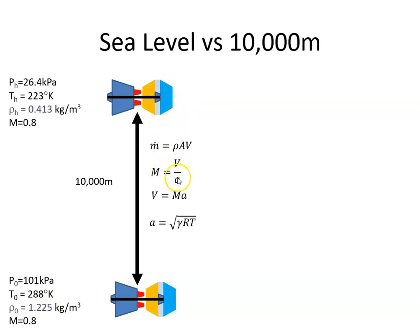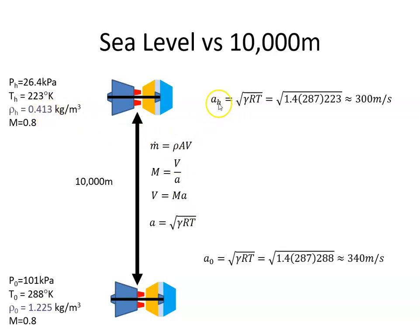The Mach number is the velocity over the speed of sound. If we transpose that we can get the velocity which is the Mach number times the speed of sound, and the speed of sound is gamma RT. So gamma is the ratio of specific heat capacities and R is the universal gas constant. At altitude the speed of sound will be gamma R, these are two constants, 1.4 and 287, and the temperature. The ISA temperature at that altitude is 223, so that gives me a speed of sound of 300 meters per second, whereas at sea level the temperature is 288 degrees Kelvin so that's 340 meters per second.